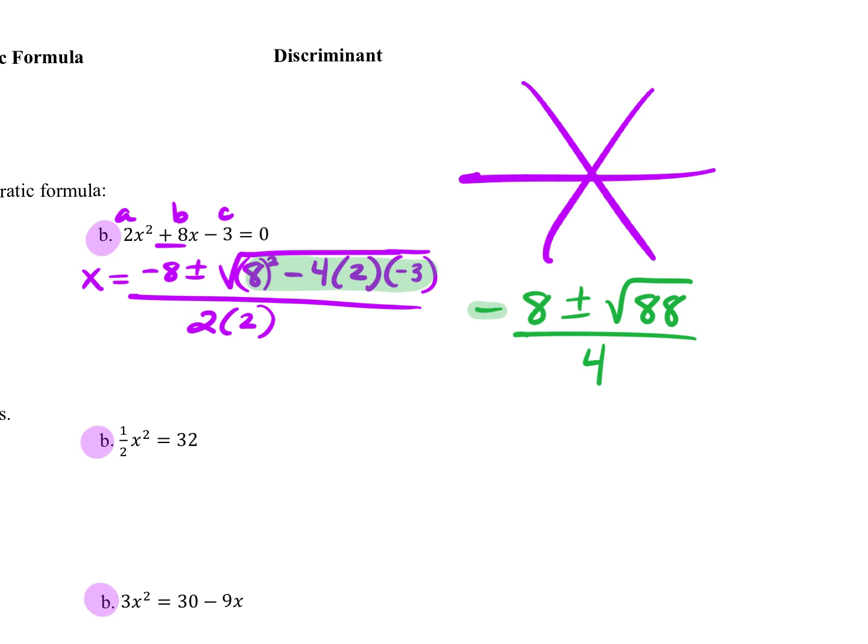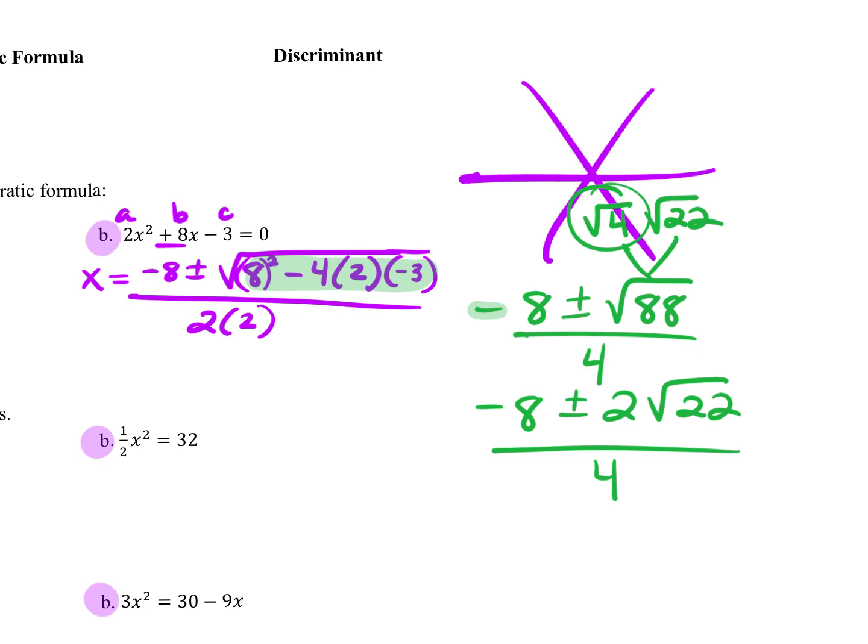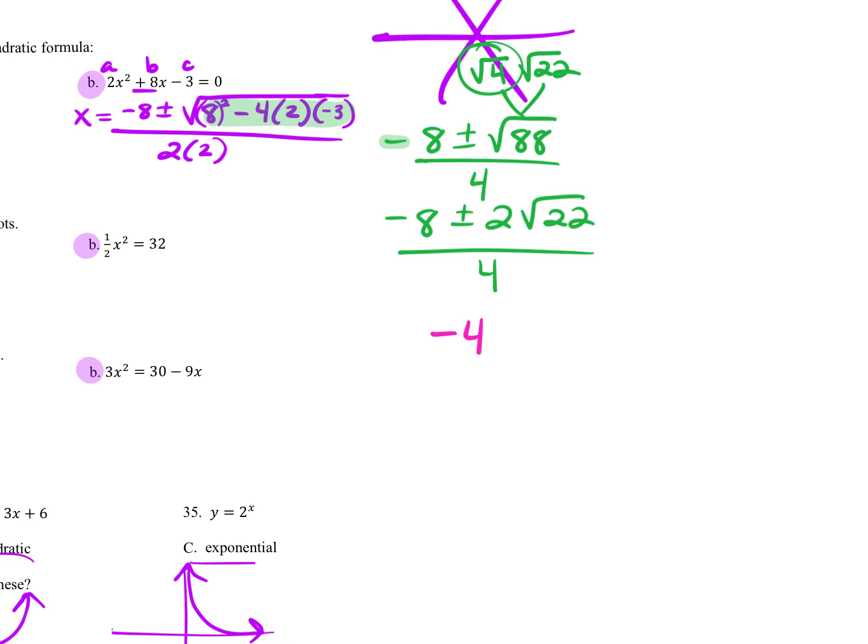What perfect square is 88 divisible by? Perfect square. 4, 9, 16, it's 4. So this is going to break into the square root of 4 and the square root of 22. So this is negative 8 plus or minus, this is 2, rad 22, over 4. Now, here are your options. You can either divide everything by 2, which is what I would do.